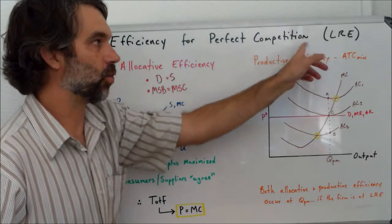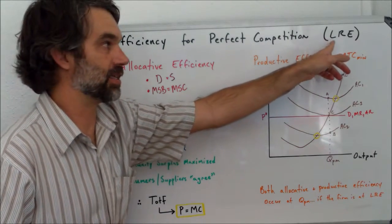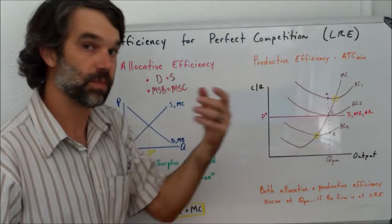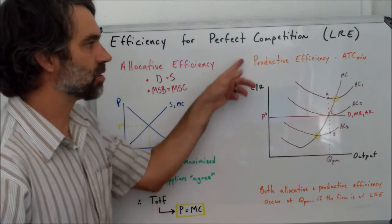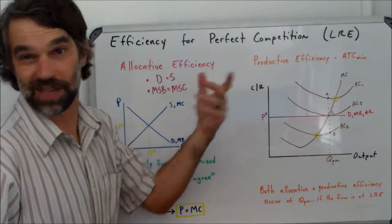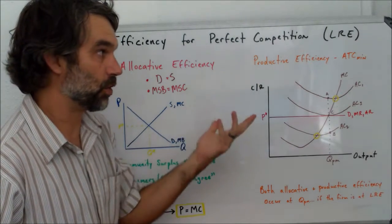And we're going to be looking in particular when the firm in perfect competition is at long-run equilibrium. If you don't know what that is, you need to go check a previous video. We're going to start off looking for productive efficiency because it's pretty easy to find and pretty easy to prove.